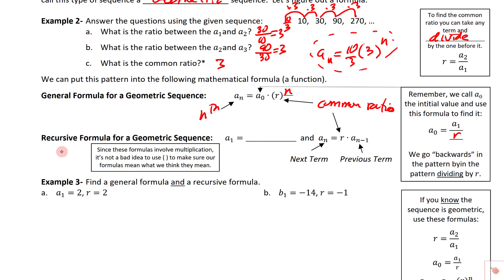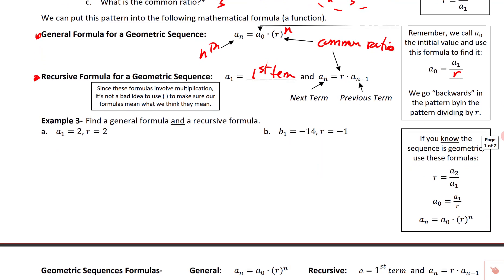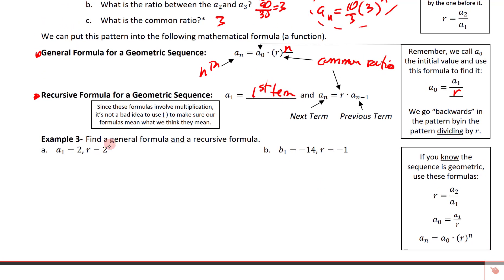For a recursive formula, we were just working with a general formula. Recursive ones are easy to write but can be a pain to use. We state a sub 1 — the first term — and then to get to the next term we take the one right before it and multiply by the common ratio. It's important to use parentheses in these problems to make sure everything is clear.